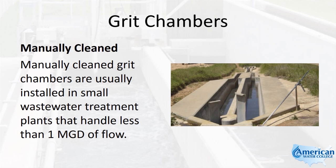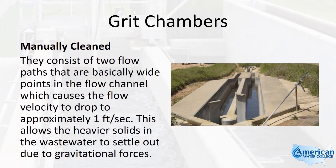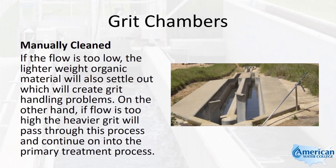Manually cleaned grit chambers are usually installed in small wastewater treatment plants that handle less than one MGD of flow. They consist of two flow paths that are basically wide points in the flow channel, which causes the flow velocity to drop to approximately one foot per second, allowing the heavier solids to settle out due to gravitational forces. If the flow is too low, the lighter weight organic material will also settle out, which will create grit handling problems.